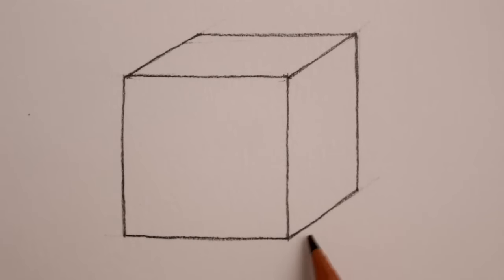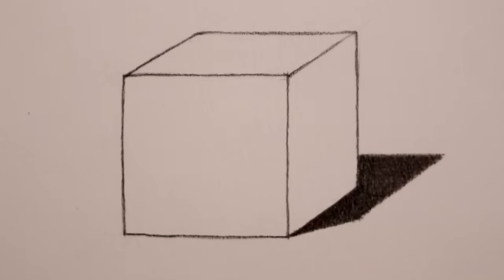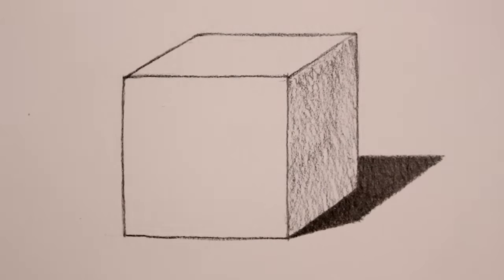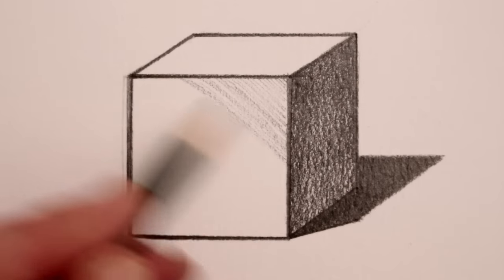With the shading just make sure one side of the cube is light, one side is medium and mid-tone and one side is dark, and then you can do various shadows as well to create a more three-dimensional solid form for your cube.